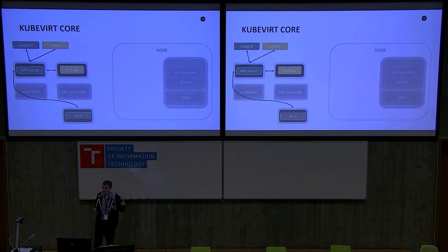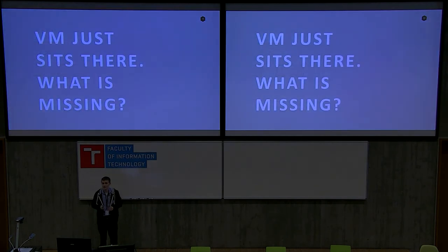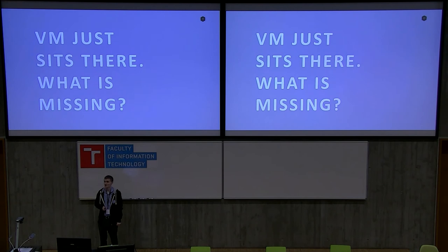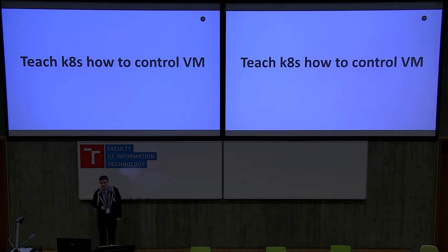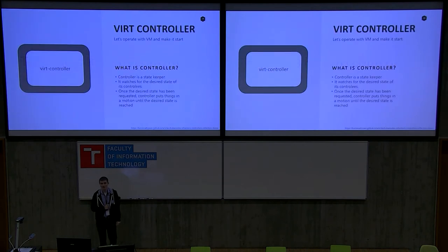Now we have KubeVirt handling the virtual machine end to end. But what's missing? We have the virtual machine sitting in etcd — storage and network. That is done by Kubernetes infrastructure: for storage we use persistent volume claims, which allow us to direct persistent volumes in. But now the VM sits there and does nothing because we have not implemented any controller. In KubeVirt, we have quite a few controllers.